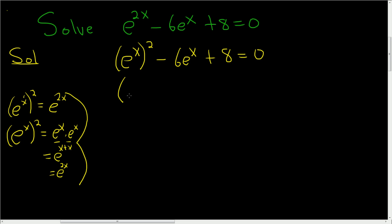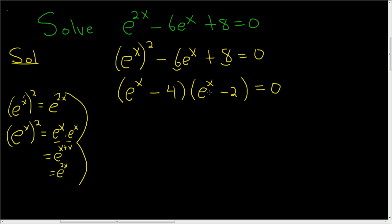Now we'll factor. This will be (e to the x)(e to the x) equals 0. We need two numbers that multiply to 8 but add to negative 6. Negative 4 and negative 2 work: negative 4 times negative 2 gives positive 8, and negative 4 plus negative 2 gives negative 6. So that checks out.